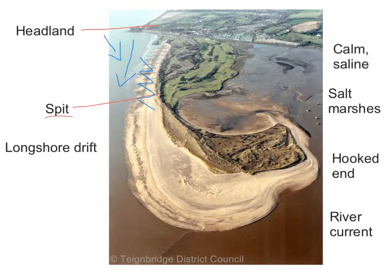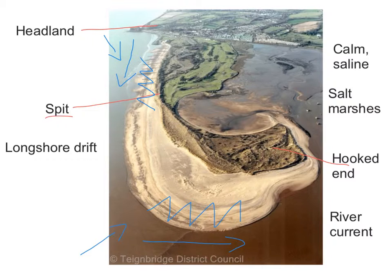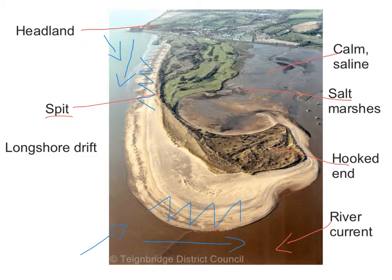On the other side of the spit we've got a hooked end, so the longshore drift has changed direction — possibly because of a secondary wind, with the prevailing wind coming from this direction, giving you your zigzag motion. The spit does not extend all the way across because there's obviously some kind of river current coming through here which prevents the extension. Behind the spit it's very calm and very saline, making perfect conditions for salt marshes to form in this region.